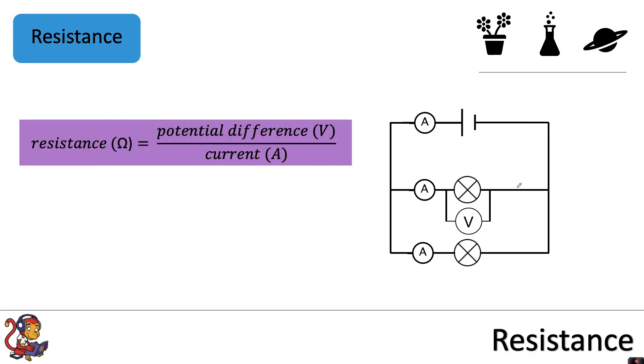Using the same equation again, let's say for example the ammeter reading was 2 amps and the voltmeter reading was 6 volts. We would do 6 volts divided by 2 amps to get our resistance of 3 ohms.